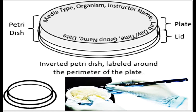To write any microbial information in a Petri dish, firstly invert the Petri dish, then label the microbial information around the plate perimeter. This includes: media type, organism name, instructor name, lab day, group name, and date.